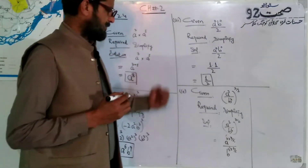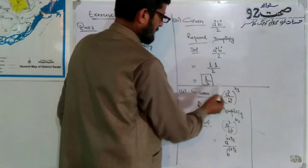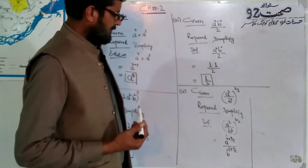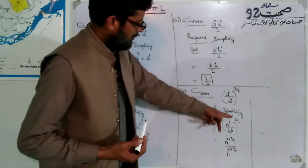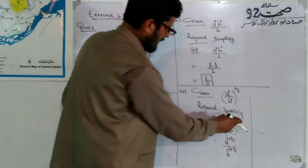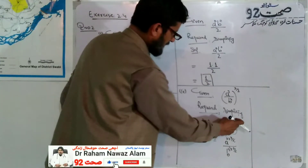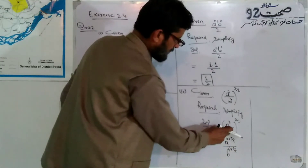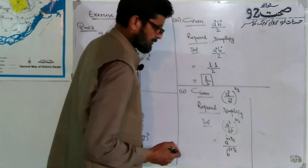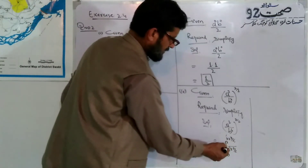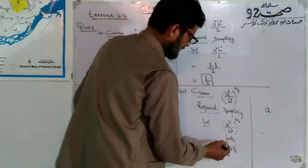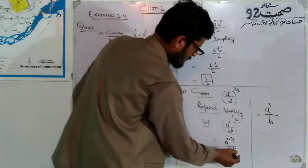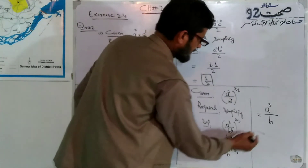Question 2, part 2: A square over B, whole to the power 3 over 2. Required to simplify. The solution: A square raised to 3 over 2 gives A power 3. Similarly, B power 4 raised to 3 over 2 — 2 times 3 is 6 — gives B power 6. So the result is A power 3 over B power 6.